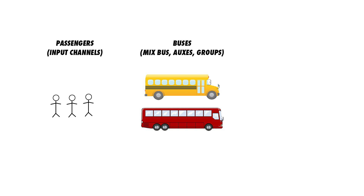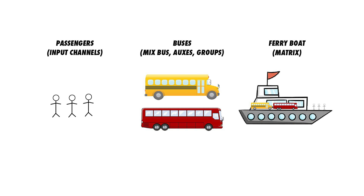He then told me to think of a matrix as a ferry, which in addition to carrying passengers, carries buses to their destinations. Thinking of it this way really helped me understand the difference between an aux and a matrix.